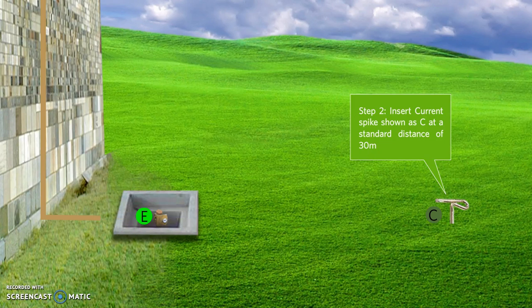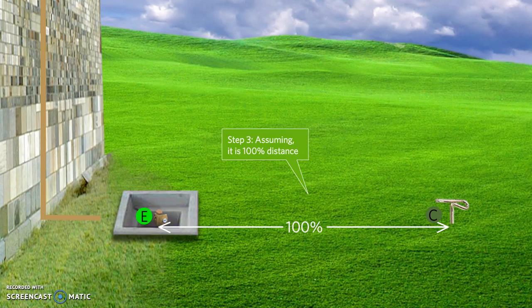Insert the current spike or PEG at a distance of 30 meters from the electrode as shown. This distance of 30 meters is considered as 100% of the distance for this test.